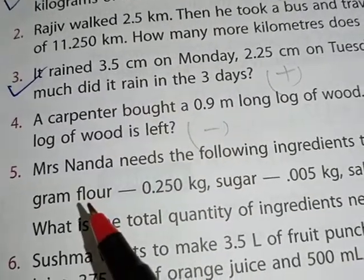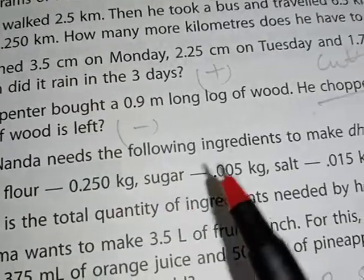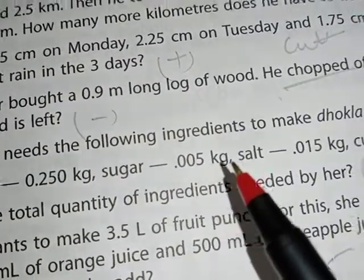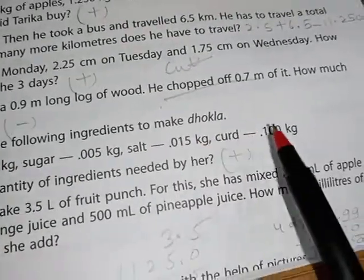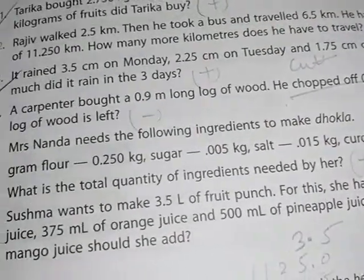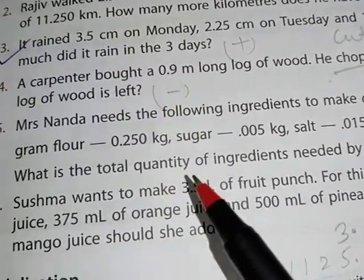Very simple. Gram flour she wants this much, sugar she wants 0.005, and salt she wants this much, and curd 0.100 kg. All of these given amounts of ingredient we will add to get the total quantity. So first of all we will write like this.